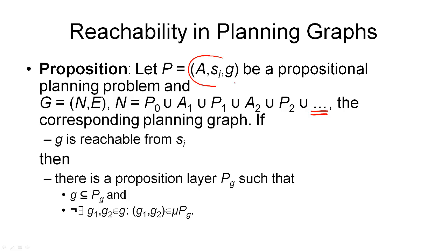Suppose we are given a propositional planning problem consisting of the usual components, and we start generating our planning graph consisting of nodes and edges — nodes being the usual proposition and action layers. Then the following must be true: if our goal G is reachable from our initial state, then there must be a proposition layer, let's call it PG, for which two conditions hold. First, all the goal conditions must be a subset of proposition layer PG — so if PG were a state, our goal would be satisfied in that state. Second, there must not exist a pair of goal conditions G1, G2 that are mutually exclusive in this proposition layer.